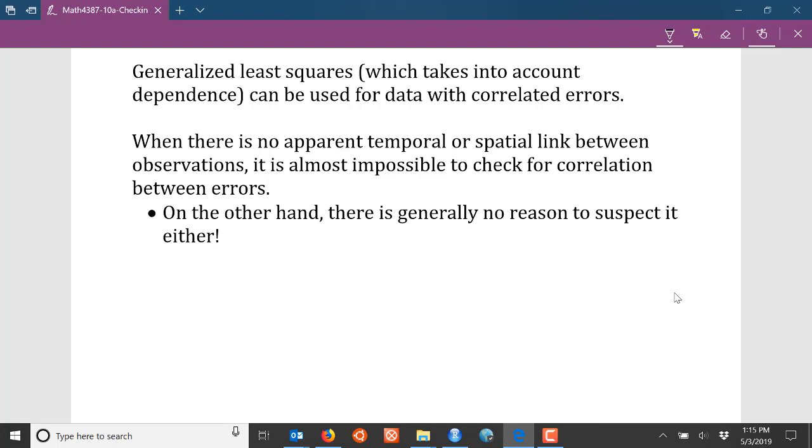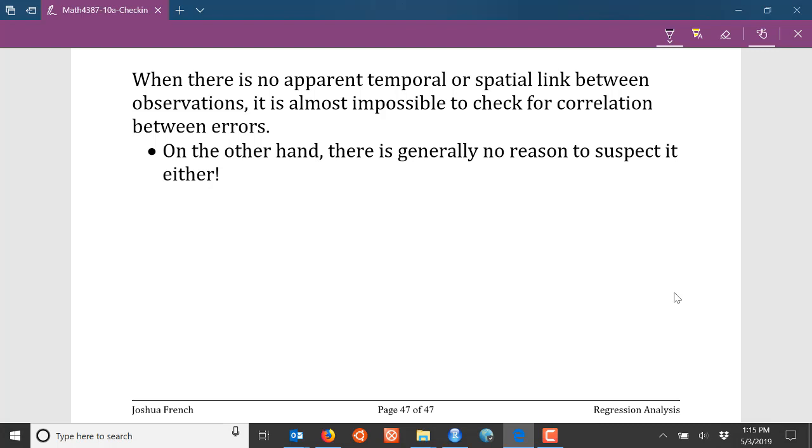If there's no apparent temporal or spatial link between your observations, in other words the data are not observed over time or they're not geographically referenced data, it's almost impossible to check for correlation between the errors. But the good news is that if you can't check for the correlation among the errors, there's really no reason to suspect it either. You can pretty much safely ignore this assumption and not worry about checking it.